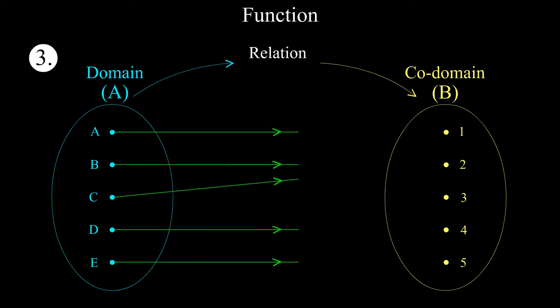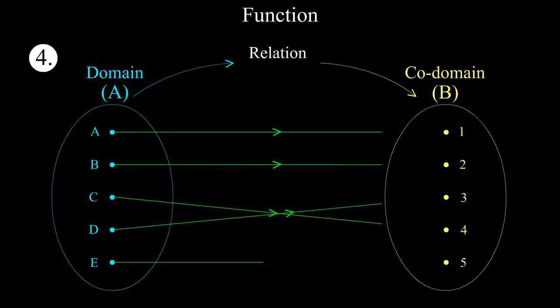If the relation would have been in this way, then it would have been a function. Now let's have a look at the fourth case. Can we say it is a function? Here first four elements are mapped uniquely but element E is not mapped with any element of its codomain. Hence this is just a relation, not a function.